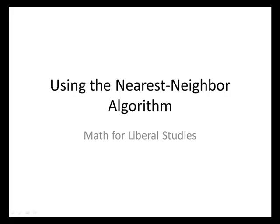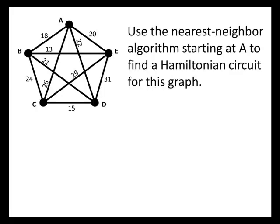In this video, we will practice using the nearest neighbor algorithm to find Hamiltonian circuits. A typical problem will look something like this: use the nearest neighbor algorithm, starting at A, to find a Hamiltonian circuit for this graph. Notice that unlike some other methods that we use to find circuits, here we have a specific starting point. We must start at A.